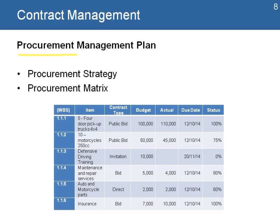The procurement management plan is a process where we identify the procurement strategy and we use a procurement matrix — a simple table that helps us identify the different items that the project will purchase through contracts — and identify not only the type but the budget, the amount planned to spend, the actual spend, due date, and status. We'll have a different presentation on this matrix.